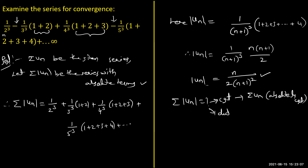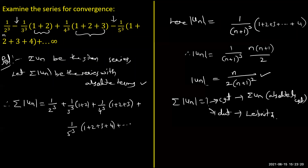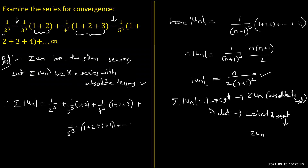We cannot use the nth root test since there is no 'something to the power of n.' Using the comparison test: taking n common from (n+1)², we get v_n as approximately 1/n — but this leads to a divergent p-series (p=1). Alternatively, try the ratio test. If summation |u_n| is convergent, we say the given series summation u_n is absolutely convergent. If summation |u_n| is divergent, we proceed with the Leibniz test.